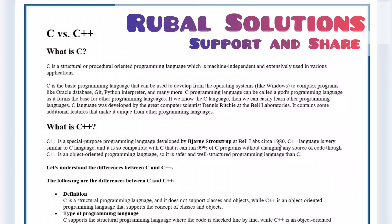C contains some additional features that make it unique from other programming languages. What is C++? C++ is a special purpose programming language developed by Bjarne Stroustrup at Bell Labs circa 1980. C++ language is very similar to C language and it is so compatible with C that it runs 99% of C programs without changing any source code, though C++ is an object-oriented programming language, so it is safer and well-structured than C.